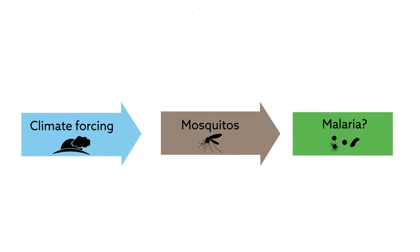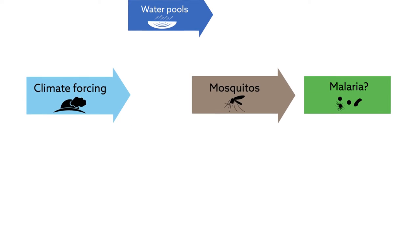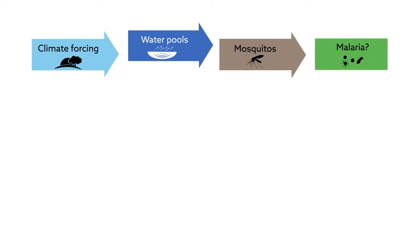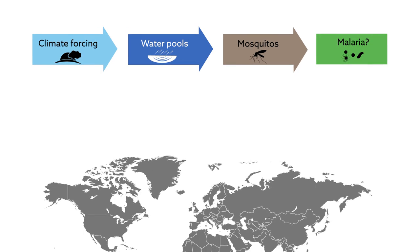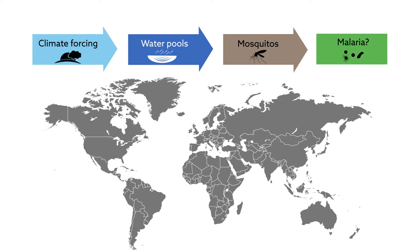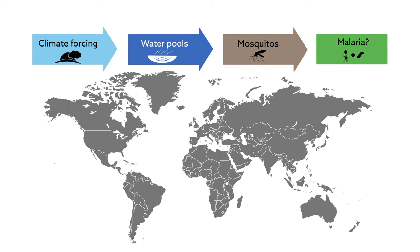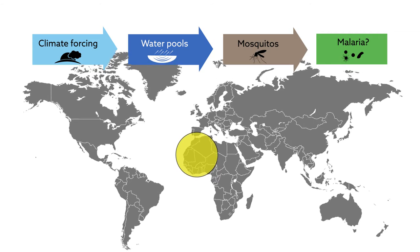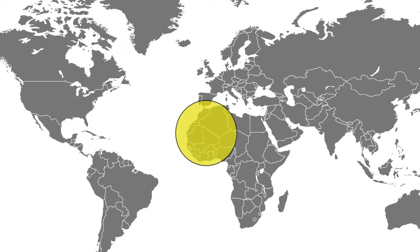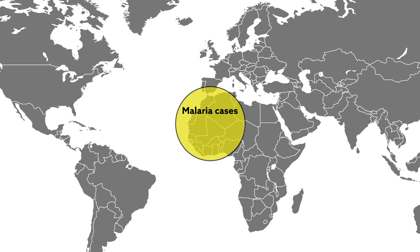Now, using a sophisticated model incorporating hydrology, researchers say that while malaria may increase in some parts of the world, it probably won't in West Africa. Their models predict that the number of malaria cases there will largely remain the same, and in some places, even decrease.